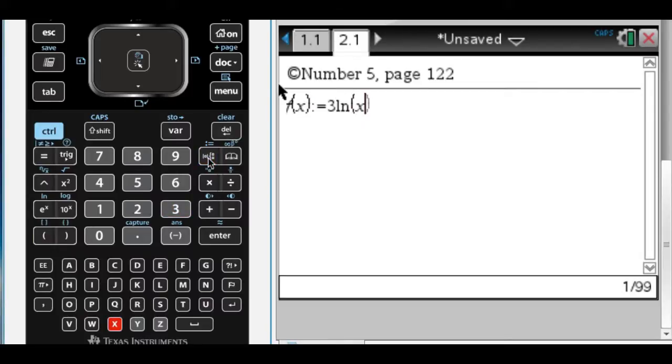3, natural log of x. Natural log of x is above e to the x. Natural log of x, and then minus 1.